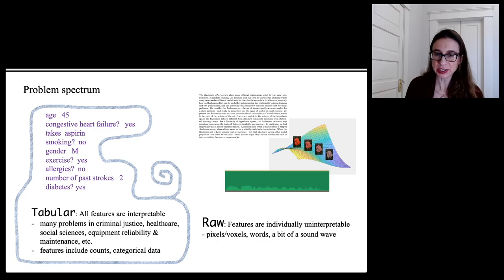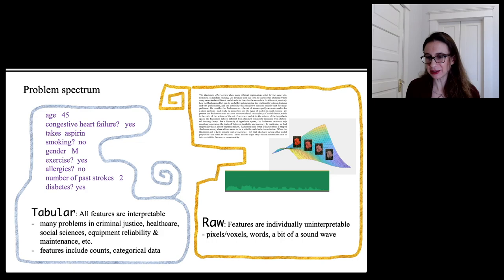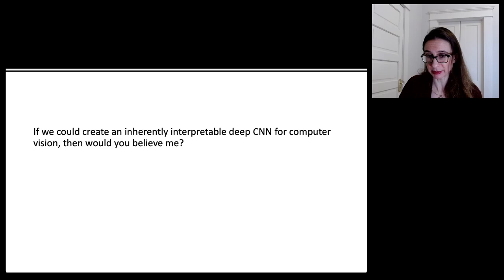We've talked about the fact that you can get very sparse models for tabular data. Now let's switch over and talk about raw data, because that's where you really need to use a neural network. But that doesn't mean the models can't be interpretable — it's just that interpretability needs to be defined differently for these domains. You can't use a sparse decision tree on pixel space; that's not interpretable. So in these problem domains, the question of what interpretability means is much more complicated than in tabular data problems.